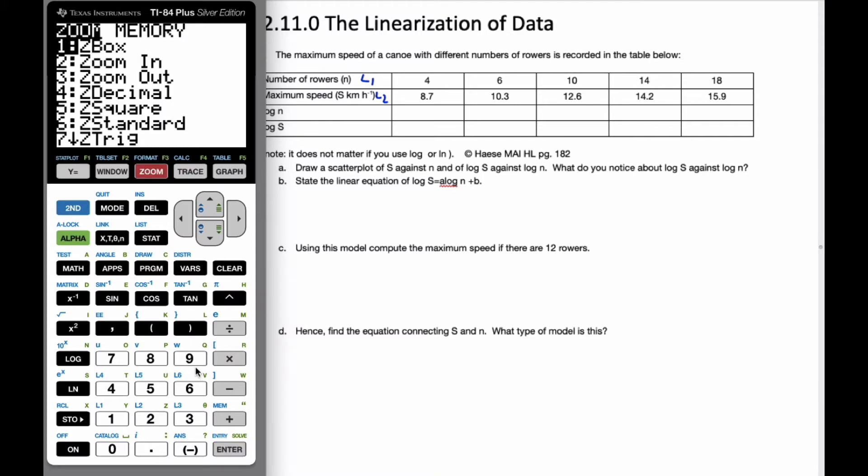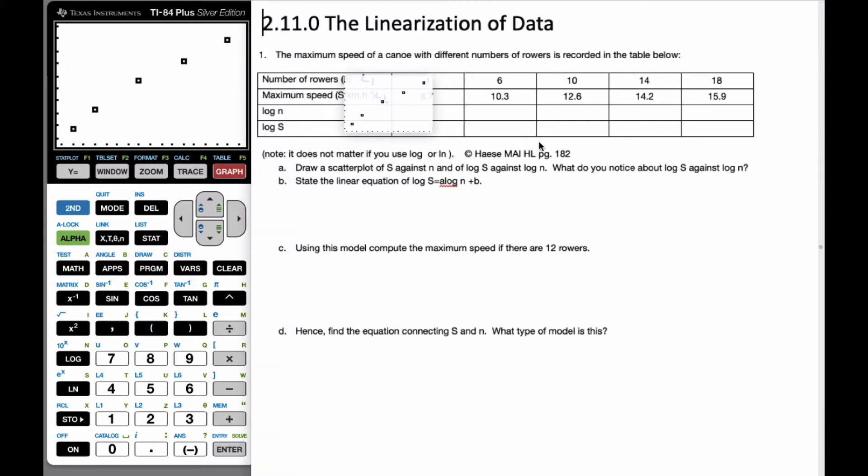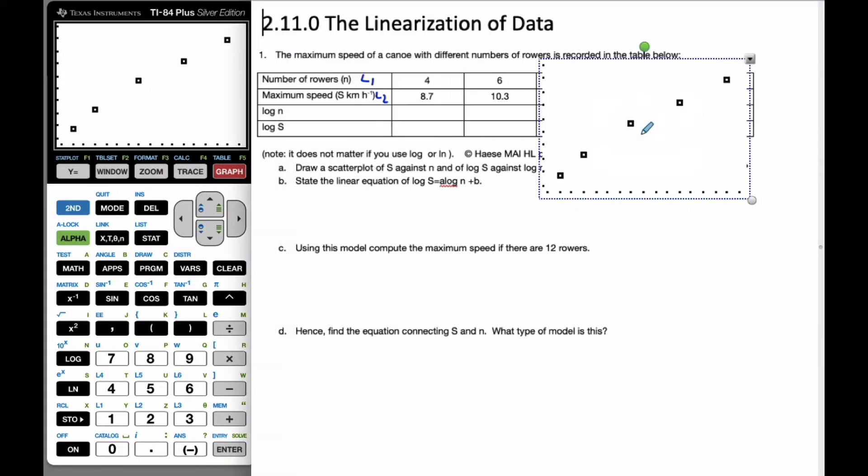And then I am going to zoom to number 9, which is the statistics window. And I will turn off my graphs and let's see what we have. So I have this scenario here, and I can see it looks pretty linear, but I can also see that there's a bend to it.